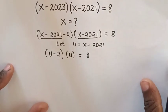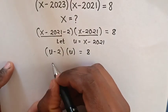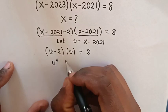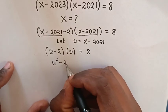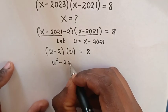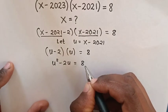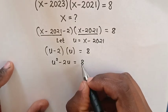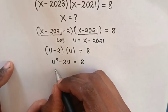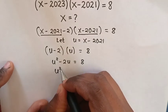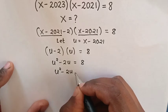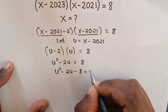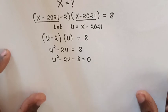Then we are going to multiply u inside the bracket, so it will be u squared minus 2u is equal to 8. Then we take 8 to the left side, so it will be u squared minus 2u minus 8 is equal to 0.